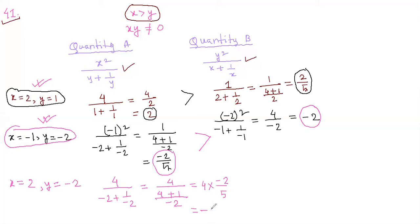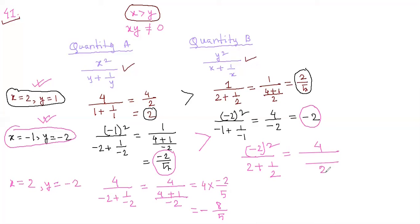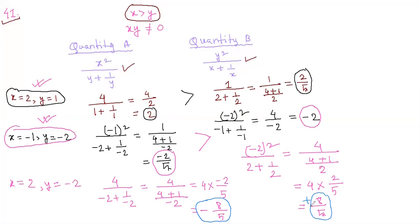Now for quantity B with x equals 2 and y equals minus 2: y squared is minus 2 squared, which is 4. And x plus 1 over x is 2 plus 1 over 2, making LCM gives 5 over 2. So quantity B equals 4 times 2 over 5, which is 8 over 5. Comparing: quantity A is minus 8 over 5 and quantity B is plus 8 over 5, so quantity B is greater for this case.